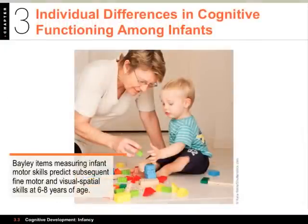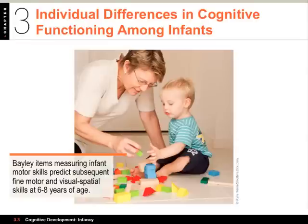Next, we want to talk about individual differences. There's something called the Bayley Scales of Infant Development, which assess both mental and motor abilities. The mental scale assesses things like verbal communication, perceptual skills, learning and memory, and problem-solving skills. The motor scale assesses gross motor skills like walking and climbing, as well as fine motor skills like the ability to manipulate fingers and hands. It's a way of assessing cognitive function across several dimensions in early children.